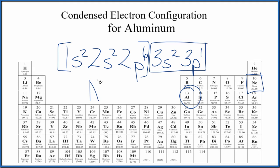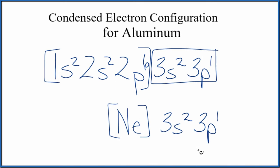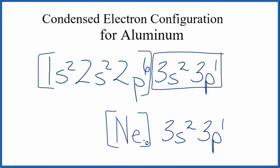So we're going to write Ne and put those brackets around it like this, and then put this after it. And we'll have our condensed electron configuration for aluminum.